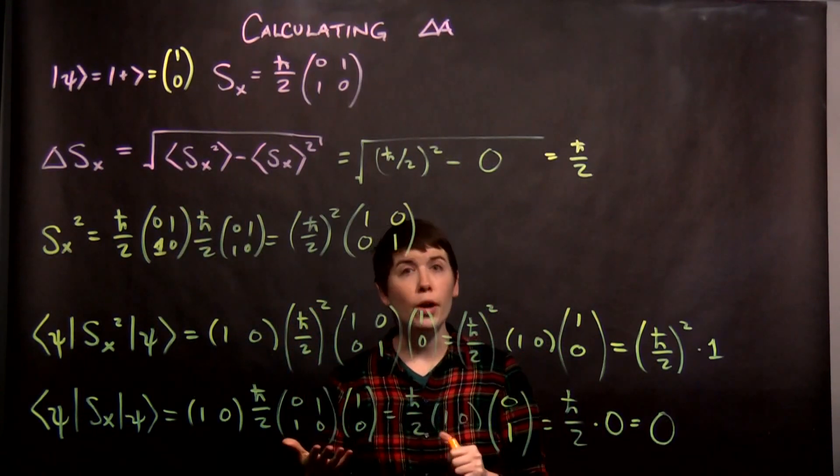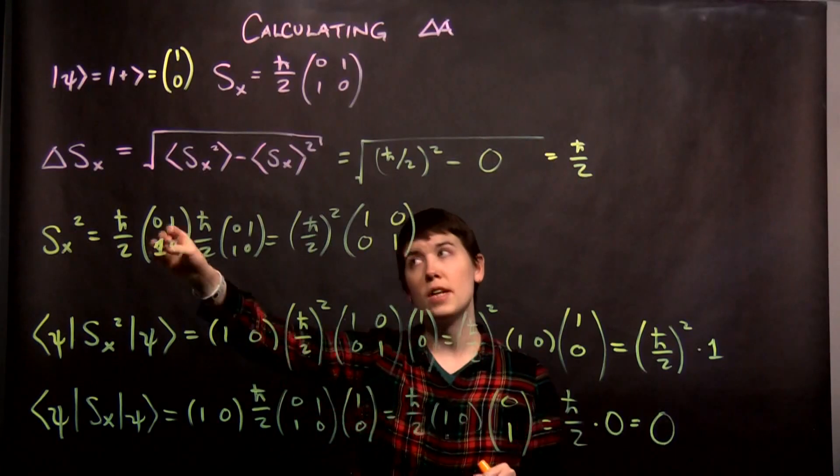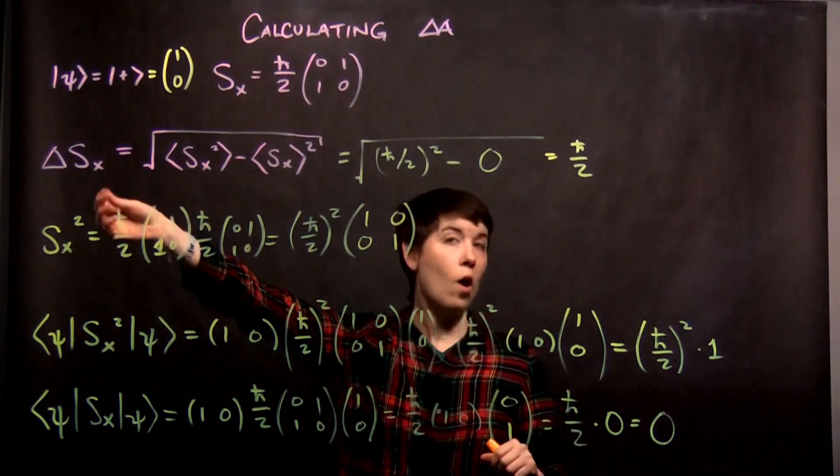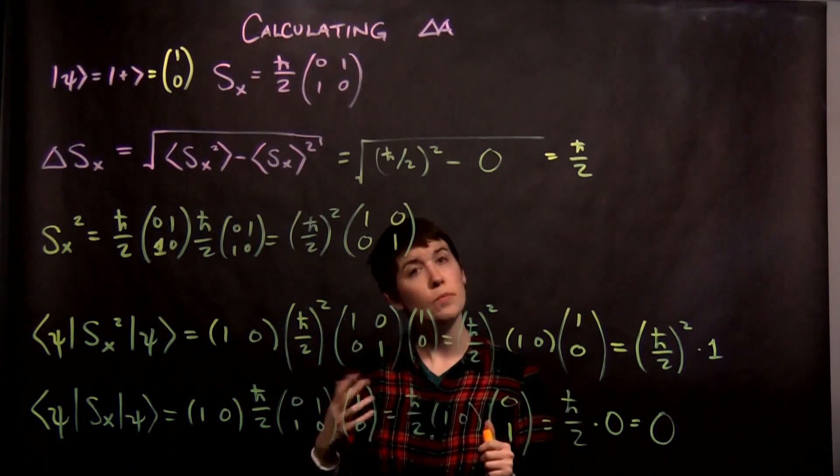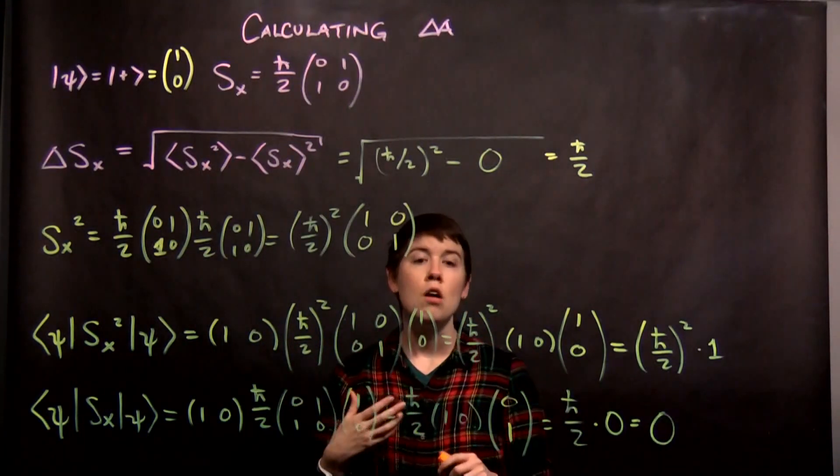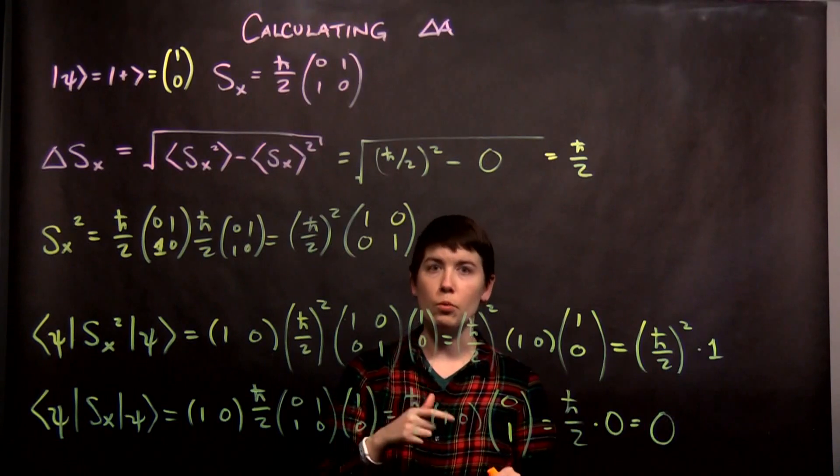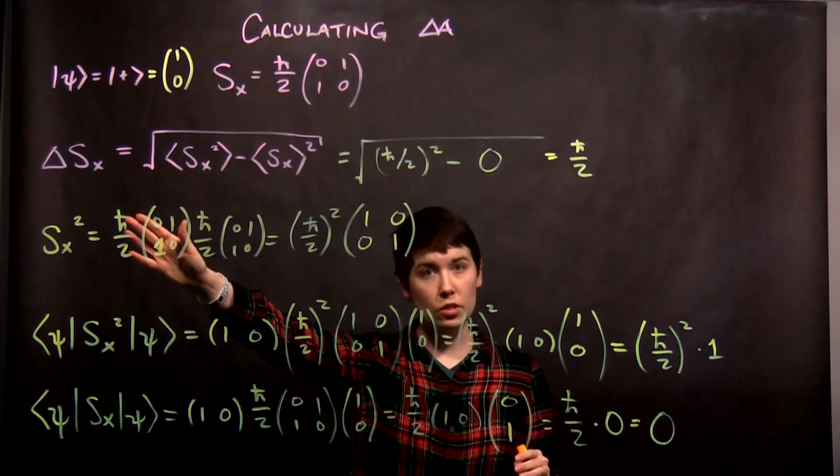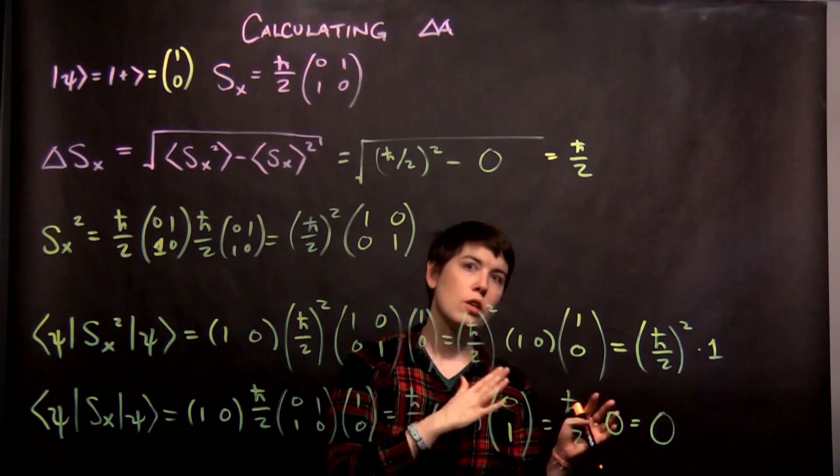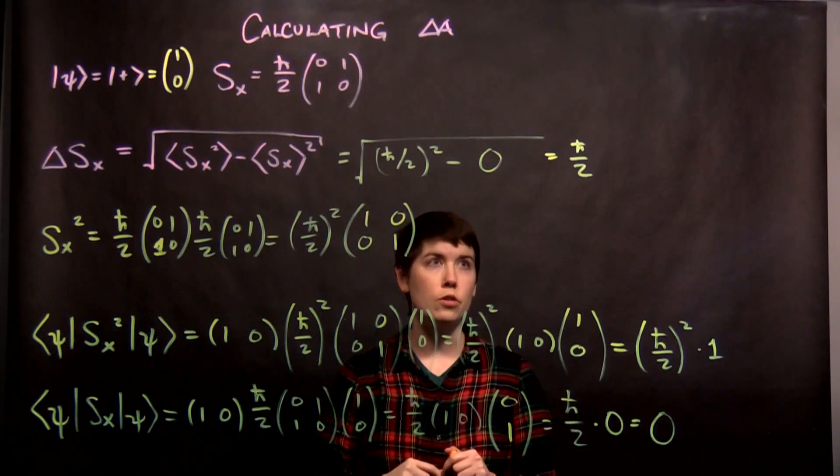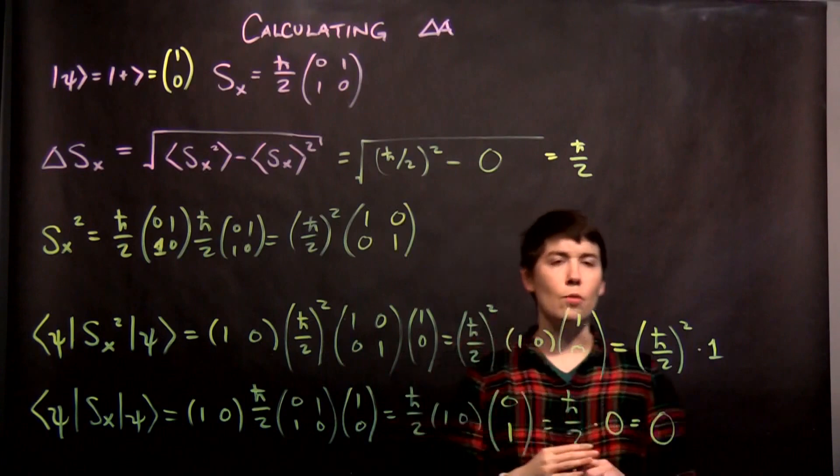And you can go through and you can redo the calculation to find the uncertainty in y, you can find the uncertainty in z, and you could then go through and check and make sure that this actually satisfies our Heisenberg uncertainty principle, where we're now relating the uncertainties, like what we just calculated, this RMS deviation, to the commutation between these operators. So I hope that this has helped explain the process.